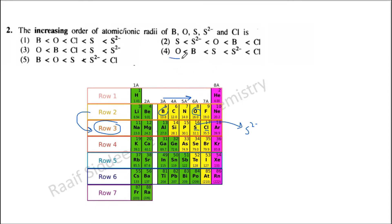So oxygen should have the lowest radius. There are only two answer choices with oxygen as the lowest. When you compare sulfur and chlorine, sulfur should have the highest radius according to the normal trend. But S²⁻, because of its negatively charged nature, should have an even higher ionic radius than sulfur. So basically, the answer is 3.